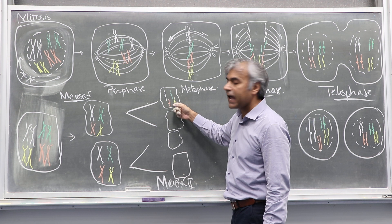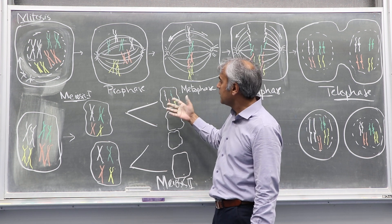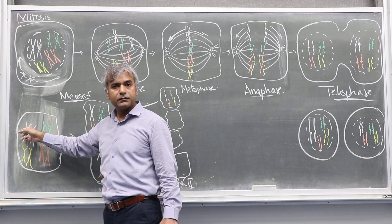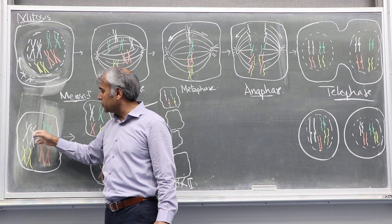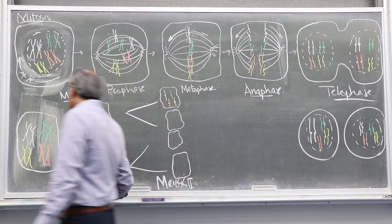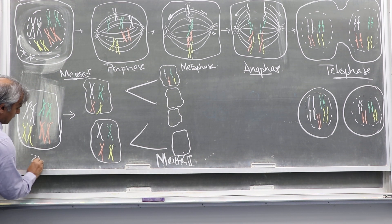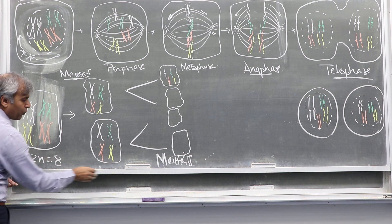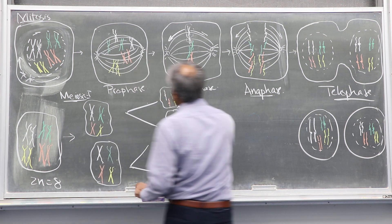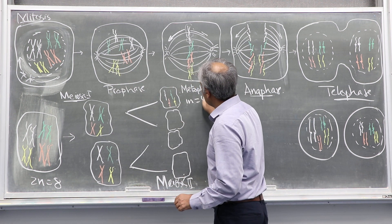The ultimate product of meiosis has just four chromosomes, and that is why we call it haploid — because it contains half the number of chromosomes. It does not contain the homologs. So here the 2N is eight — four pairs of chromosomes — and they are reduced after meiosis to four.